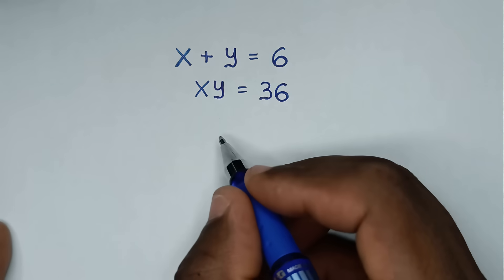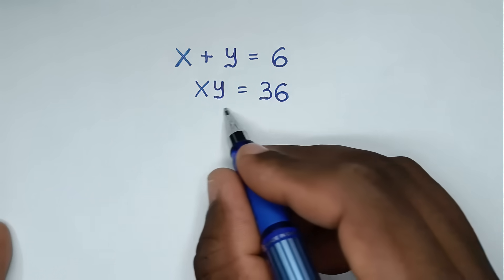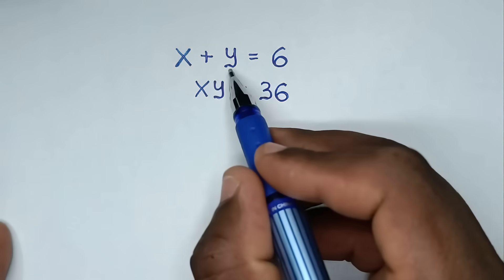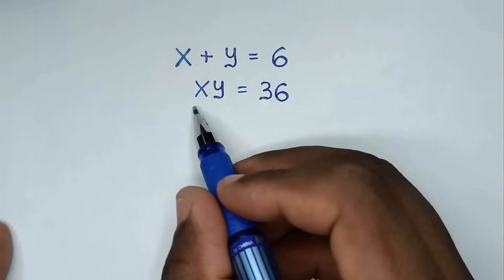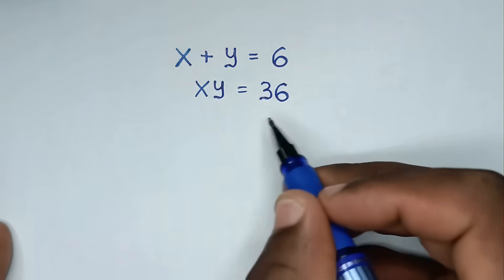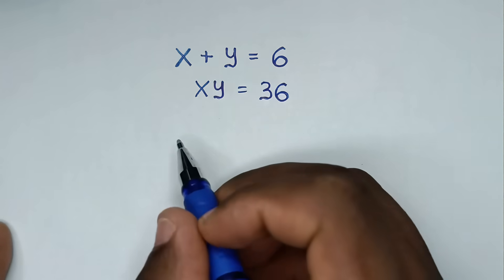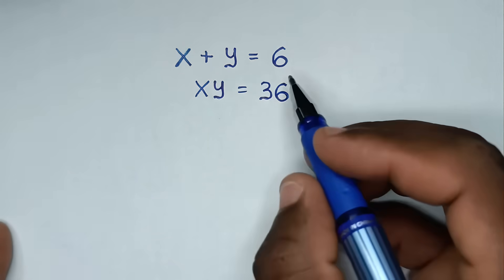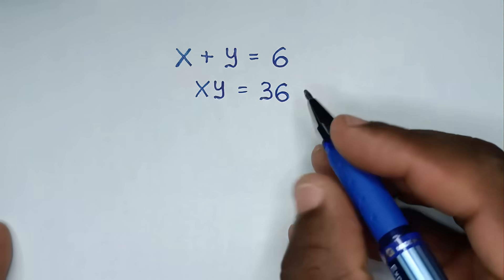Hello, you are welcome to solve this math problem, which is x plus y is equal to 6, and x times y is equal to 36. We need to find the values of x and y from these two systems of equations.